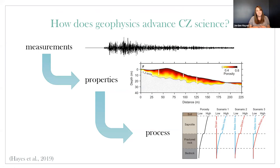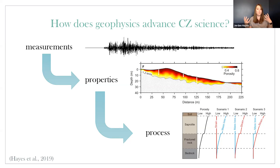I want to drive home the point that advancing critical zone science with near-surface geophysics is much more than just making the measurements. There's a whole flow: it only starts with the measurement, then involves image processing and data processing to get at those properties, and then inferring process or combining with other data sets. That's really what we're after — some mechanistic understanding of how this part of our planet works. Process is important, and we can get at process with geophysics. Remember, it's the process that makes our planet habitable and helps sustain us by delivering things like nutrients and water.